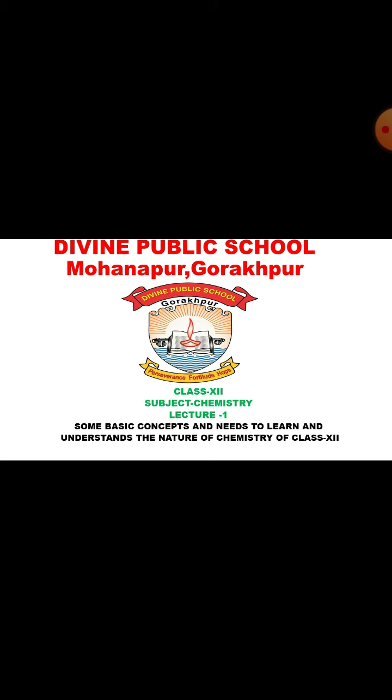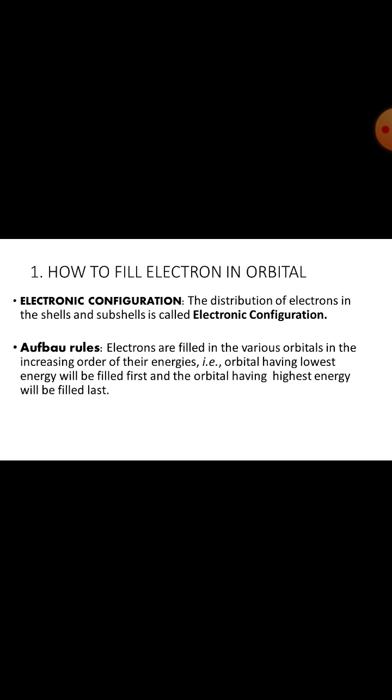In this topic, I will discuss some facts which help you to learn every chapter of chemistry in class 12th. Fact number 1. Everyone has to know this - how to fill the electron in orbital. The electronic configuration may be defined as the distribution of electrons in a shell and subshell.